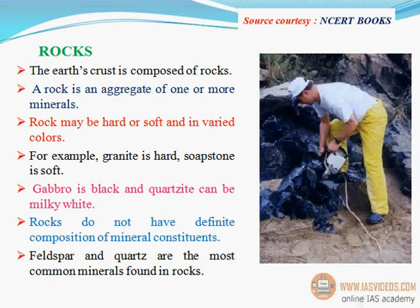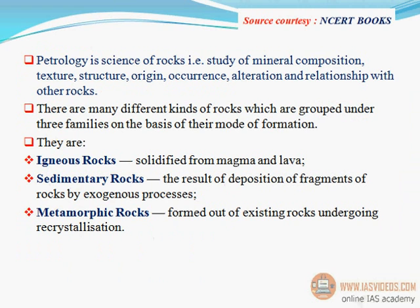Rocks: the earth's crust is composed of rocks. A rock is an aggregate of one or more minerals. Rock may be hard or soft and in various colors — for example, granite is hard, soapstone is soft, gabbro is black, and quartzite can be milky white. Rocks do not have definite composition of mineral constituents. Feldspar and quartz are the most common minerals found in rocks. Petrology is the science of rocks — the study of mineral composition, texture, structure, origin, occurrence, alteration, and relationship with other rocks.